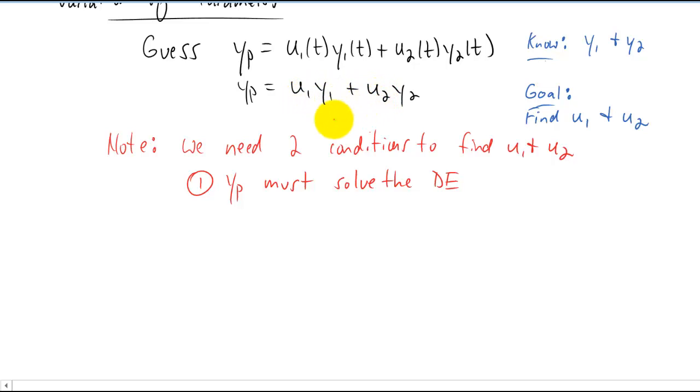The first condition is a pretty obvious one. It's the condition that our guess, yp, must solve the differential equation. Now since that's the only condition that actually matters, that this particular solution solved the differential equation, we can make up a second condition wherever we want in this process to make our lives a little easier. So this is to be announced.